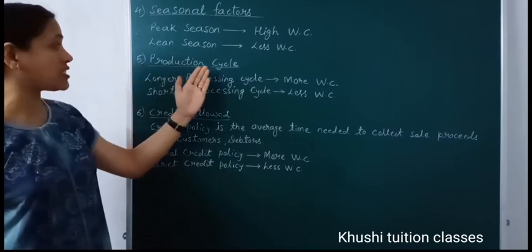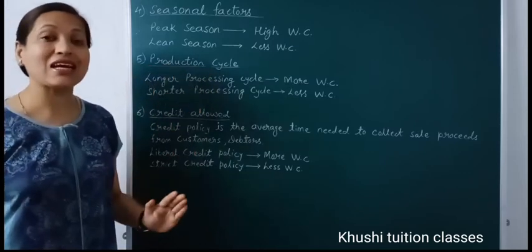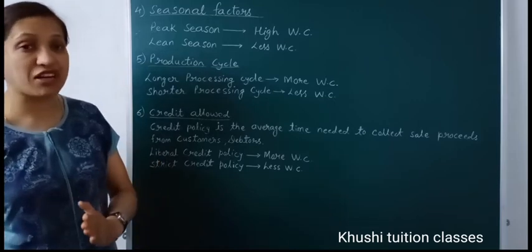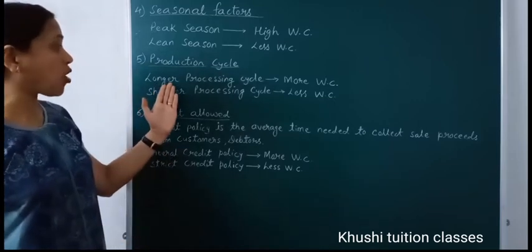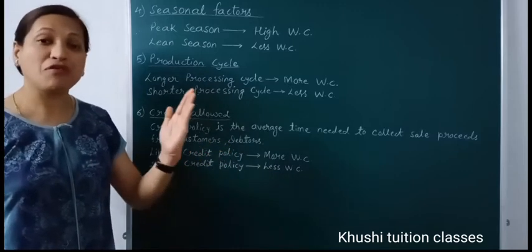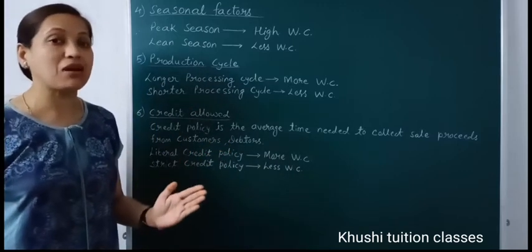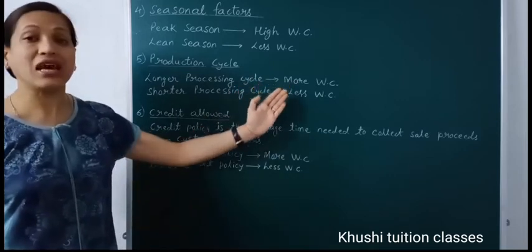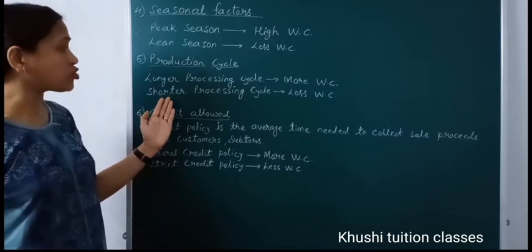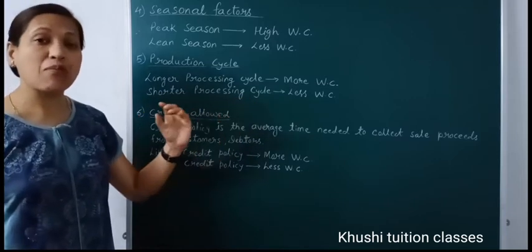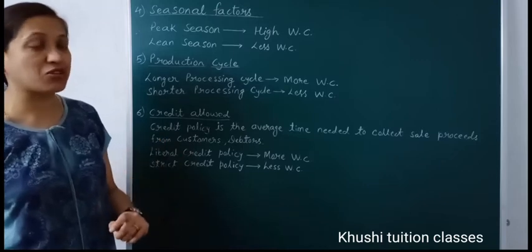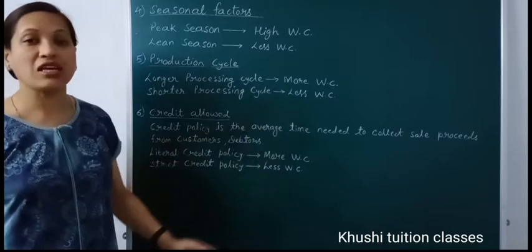The fifth factor is production cycle — the time required to convert raw material into finished goods. If it is a longer processing cycle, then you will need a lot of time to convert raw material into finished goods, so you will need more working capital. But if there is a shorter processing cycle, then conversion is faster, so you will need less working capital.